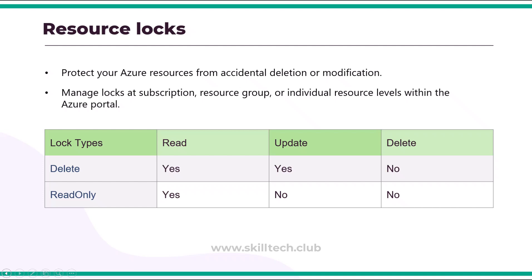When you apply a resource lock, the lock types include read, update, and delete. Whichever lock you apply, users will be restricted from performing those actions. Even if you have a lock applied and try to delete the resource, you cannot do so until you first delete the resource lock — essentially unlocking that resource.